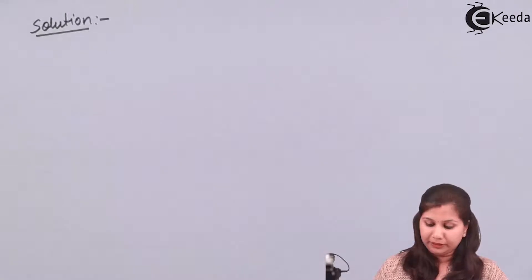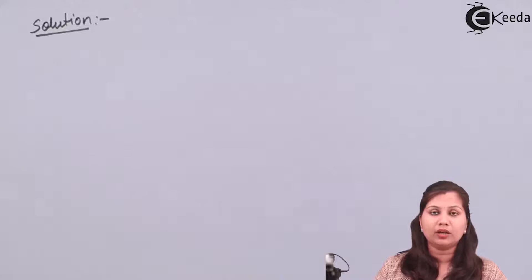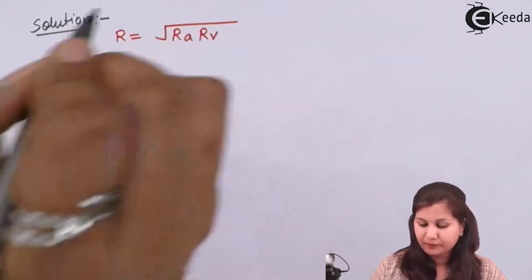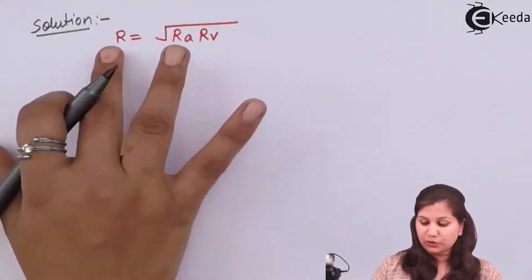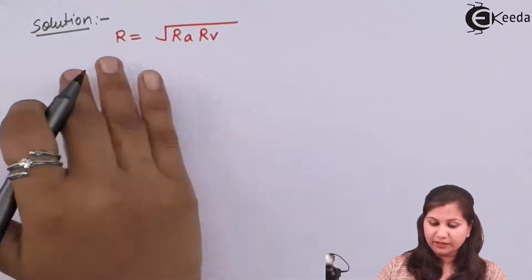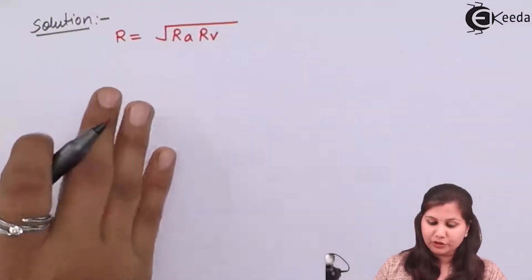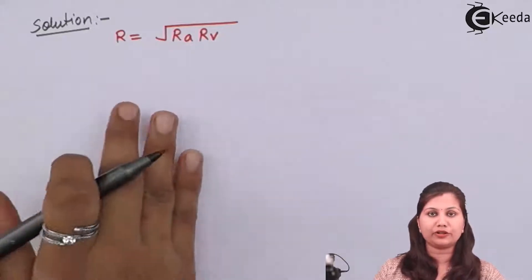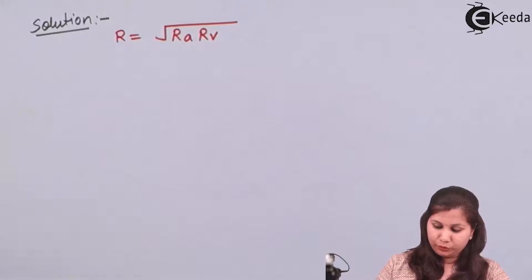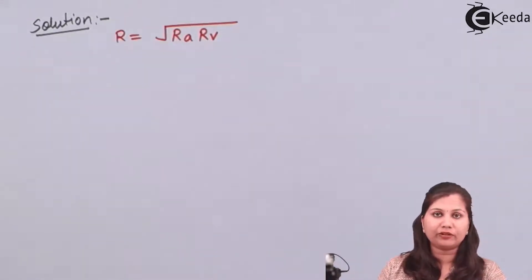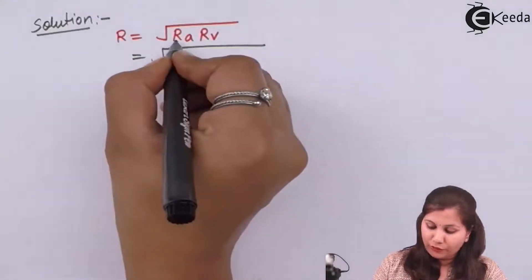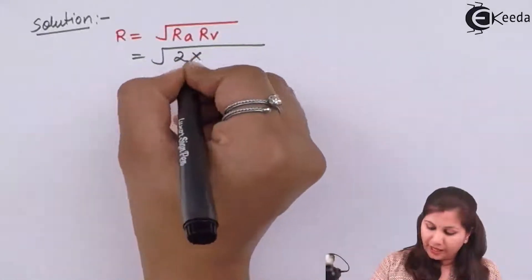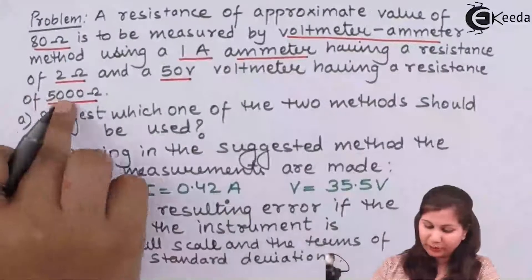In the ammeter-voltmeter method, to determine which connection to use, there is a formula: R equals the square root of Ra times Rv. Resistances greater than this value are measured using the first method and those less than this value are measured using the second connection. The value of Ra, the resistance of the ammeter, is given as 2 ohms and Rv, the resistance of the voltmeter, is given as 5000 ohms.